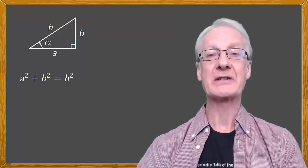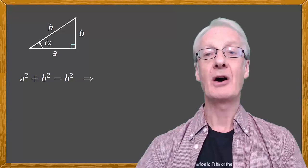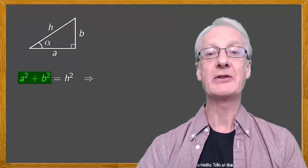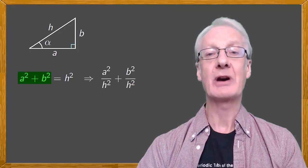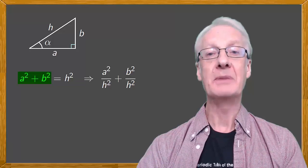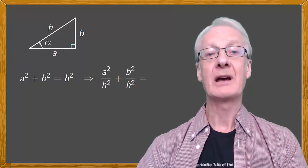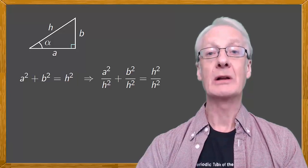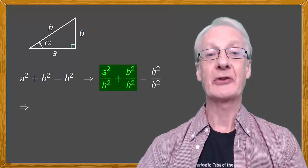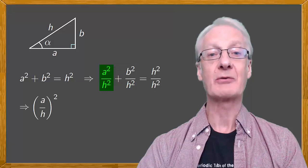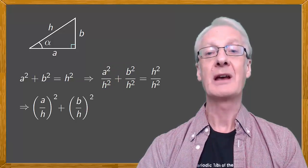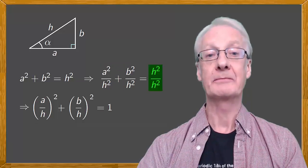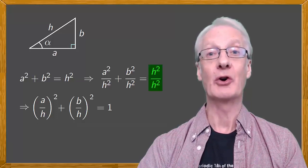Let's now divide this expression by h squared. On the left side we divide each of the addends to give a squared over h squared plus b squared over h squared. And on the right we have h squared over h squared. We can write the left side as a over h squared plus b over h squared. And this is equal to 1, because anything divided by itself is 1.